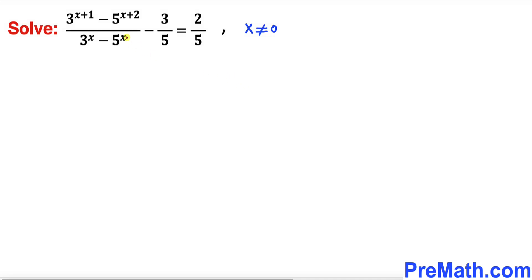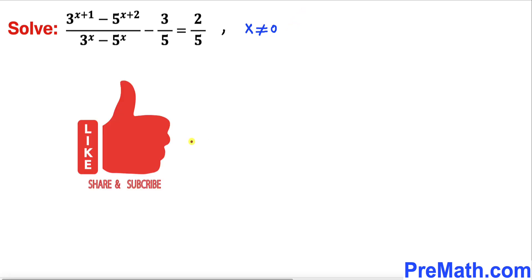Welcome to pre-math. In this video we are going to solve this given rational exponential equation: (3^(x+1) - 5^(x+2)) / (3^x - 5^x) - 3/5 equals 2/5, where x is not equal to 0. Please don't forget to give a thumbs up and subscribe.